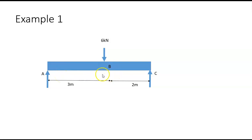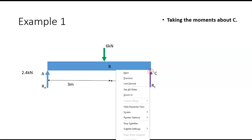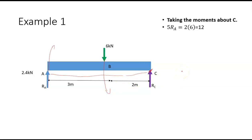The first thing we'll do is work out the reaction forces at A and C. To do that we'll take moments about A or C. We'll start with moments about C, saying that the clockwise moments must be equal to the anti-clockwise moments. The clockwise moment goes in this direction and the anti-clockwise moment in the other.